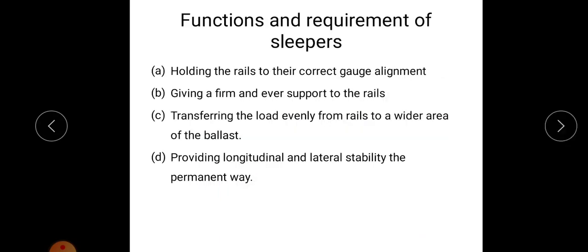So what are the functions and requirements of sleepers? This we have discussed in the first module. The functions of sleepers are first, holding the rails to the correct gauge alignment. In order to hold the rails to the correct gauge alignment, we are providing sleepers and it gives a firm and ever support to the rails. It gives a permanent support to the rails.